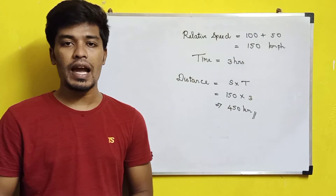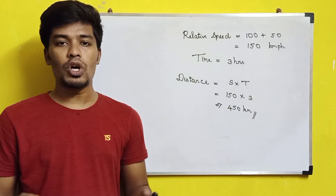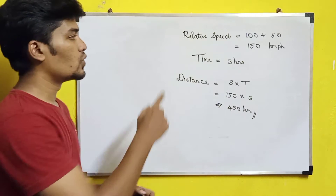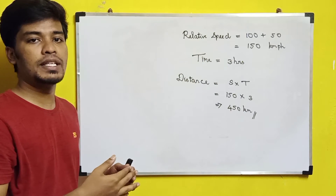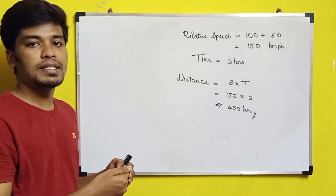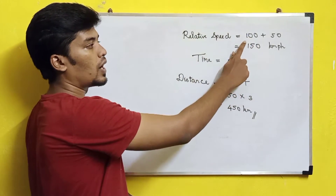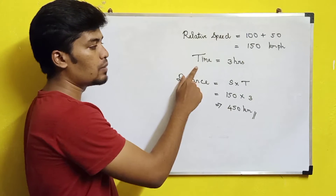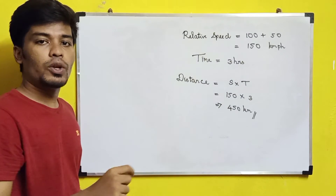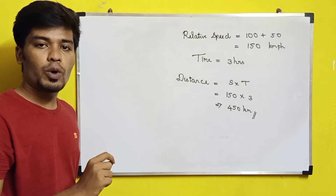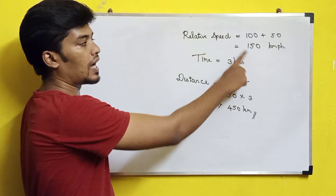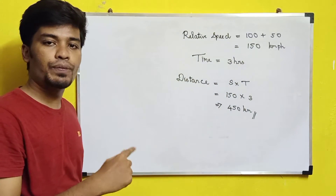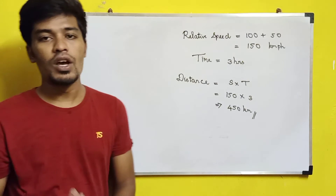If two trains are approaching each other, the relative speed is calculated by adding the two speeds. So relative speed is 100 plus 50, which gives 150 km per hour. The time given is 3 hours. Now to find the distance, we use the formula: distance equals speed multiplied by time. So 150 km per hour multiplied by 3 hours gives the distance as 450 km.